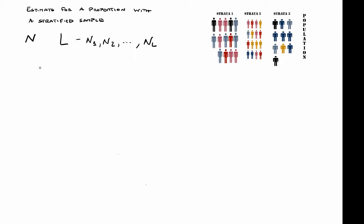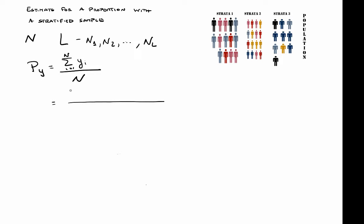We are interested in getting an estimator for the proportion of a certain variable Y, which we know is given by the sum over all elements in the population divided by the size of the population. The first step we'll take is to write this expression for this proportion as a sum within each stratum of the Y_i.